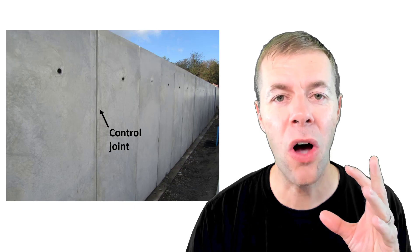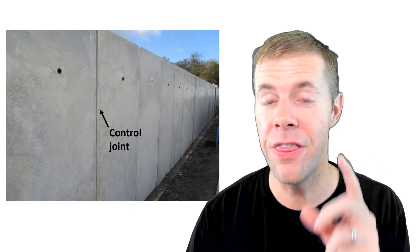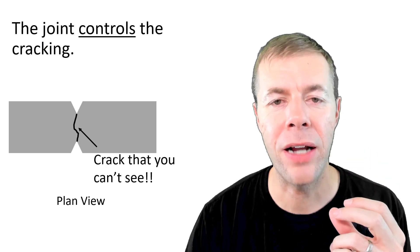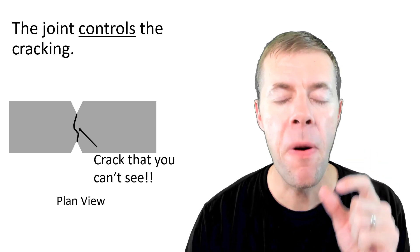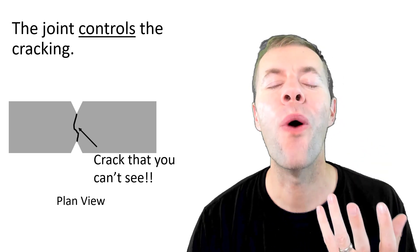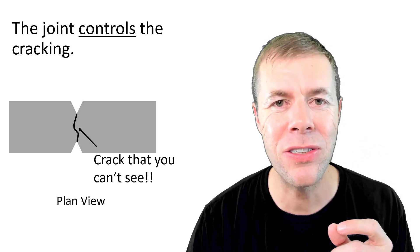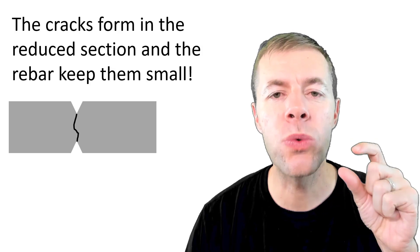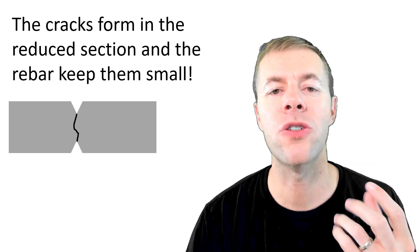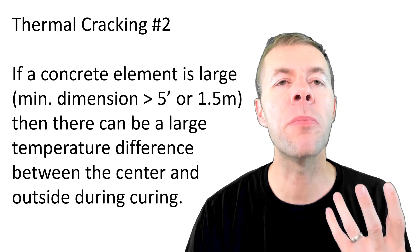Here it is on a finished wall. These folks understood thermal cracking. This joint controls the cracks. The cracks happen, but they happen at a known spot. You control where they form, and you can't see them. The cracks form in this reduced cross-sectional area, and the rebar you put in it keeps the cracks small.